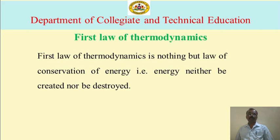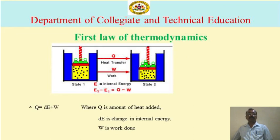In this figure there are 2 states: state 1 and state 2. Heat is transferred from state 1 to state 2 and work is done. So E2 minus E1 is equal to Q minus W, where E2 minus E1 is the change in internal energy. Therefore Q equals delta E plus W, where Q is the amount of heat added, delta E is the change in internal energy, and W is the work done.